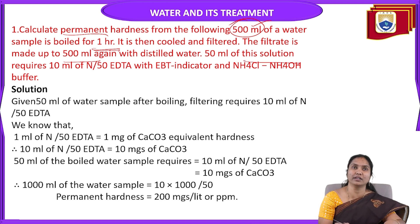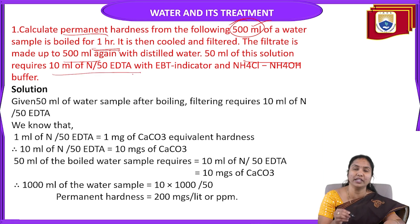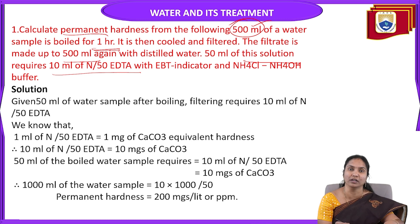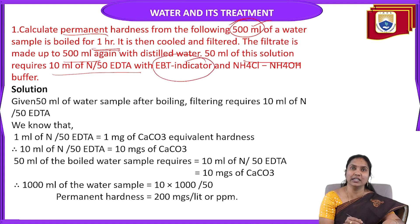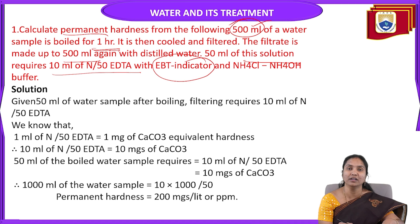50 ml of this prepared solution requires 10 ml of N/50 EDTA. Above, we prepared 500 ml of this water sample using distilled water. From that prepared water sample we take only 50 ml and perform titration using EDTA. In this titration it requires 10 ml of N/50 EDTA with EBT indicator. In the EDTA method we use Eriochrome Black T (EBT) indicator to find out the end point.